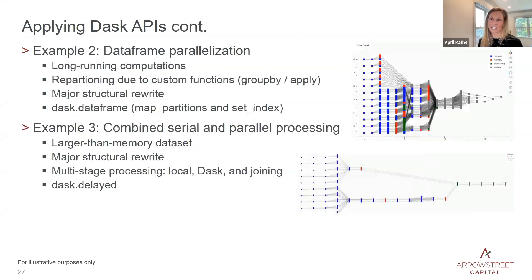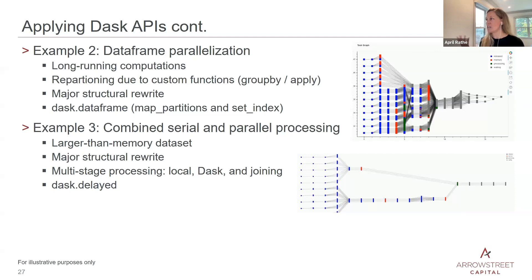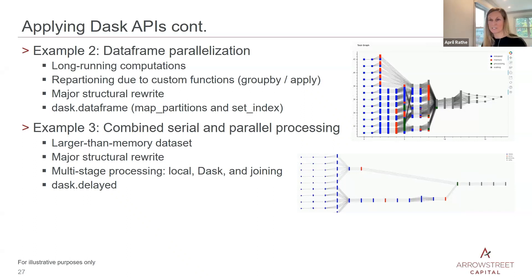Example two used Dask DataFrame — excellent for demonstrating ease of use, as you simply switch from pandas to Dask DataFrame. However, it required a rewrite because of the processing involved, with many group-bys and repartitioning based on the computation structure. We leveraged Dask DataFrame with map_partitions and set_index to implement this. The third example was a combined case — the trickiest — where some steps must be done serially and others in parallel. It was a multi-stage process with some work done locally on the client side, some on Dask, built using Dask delayed.